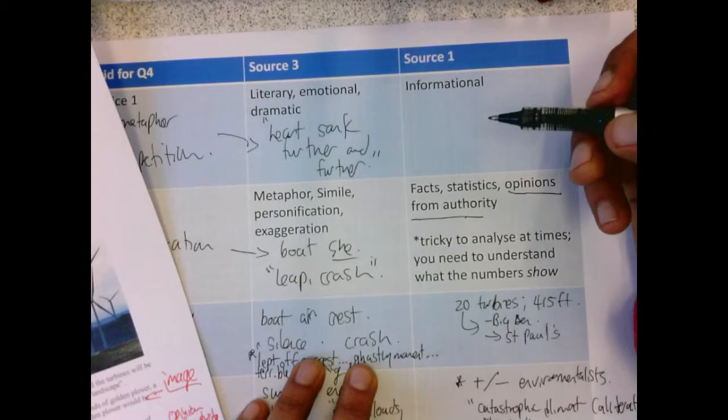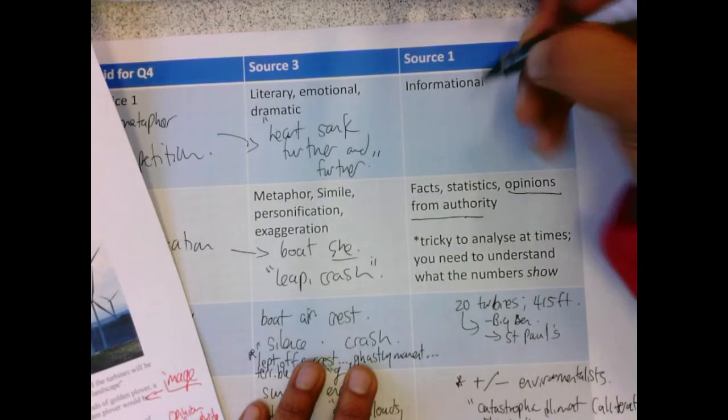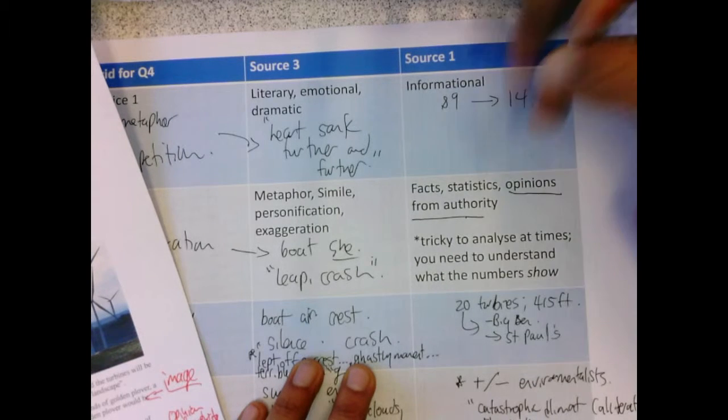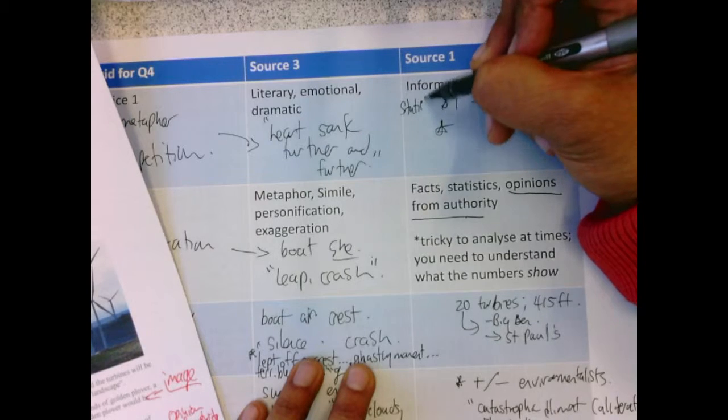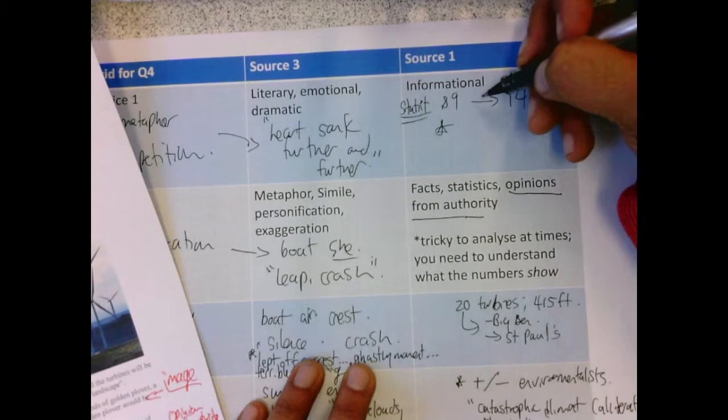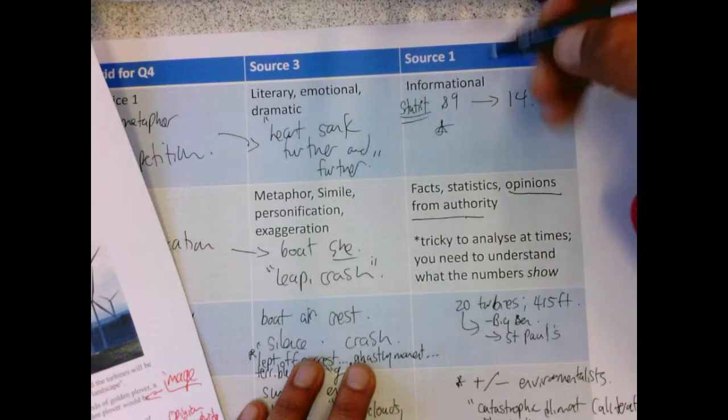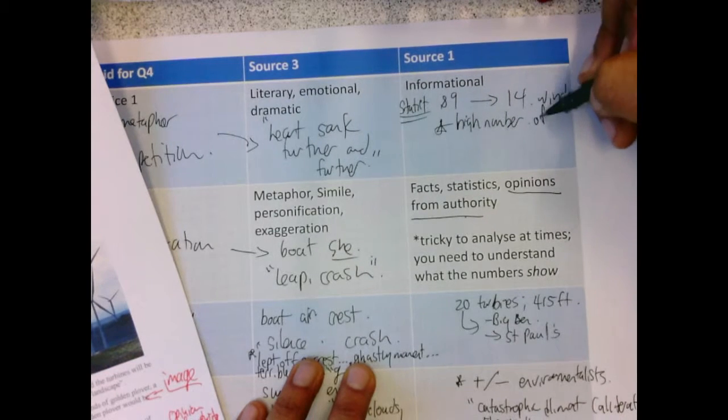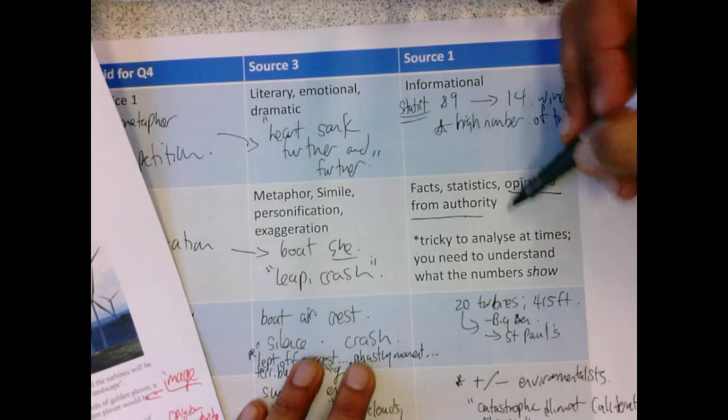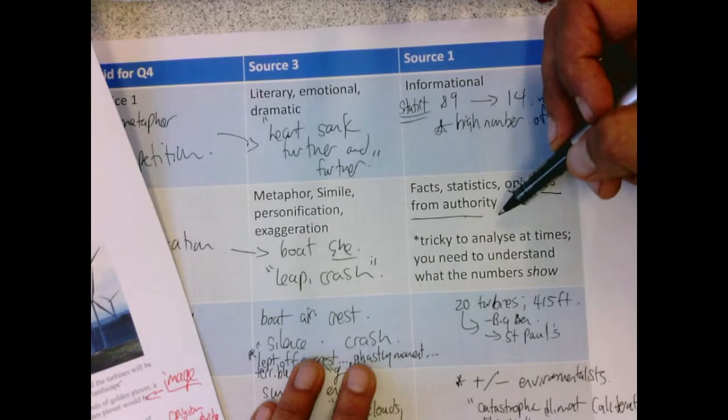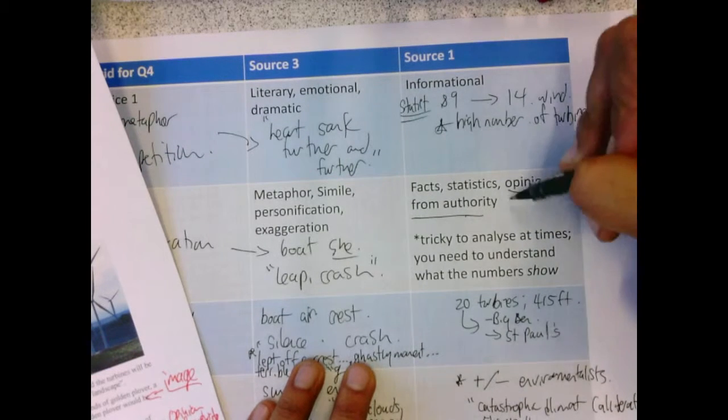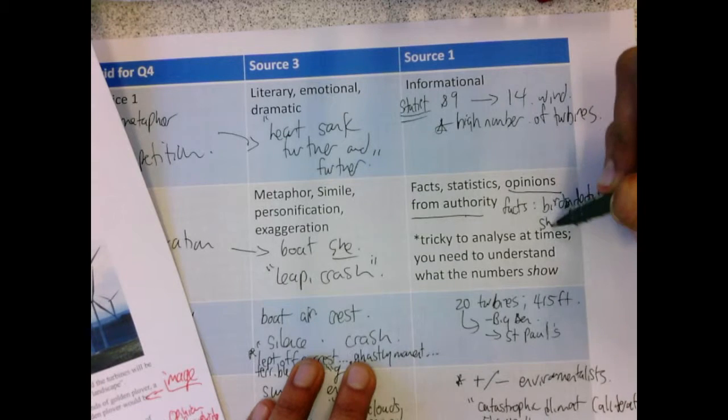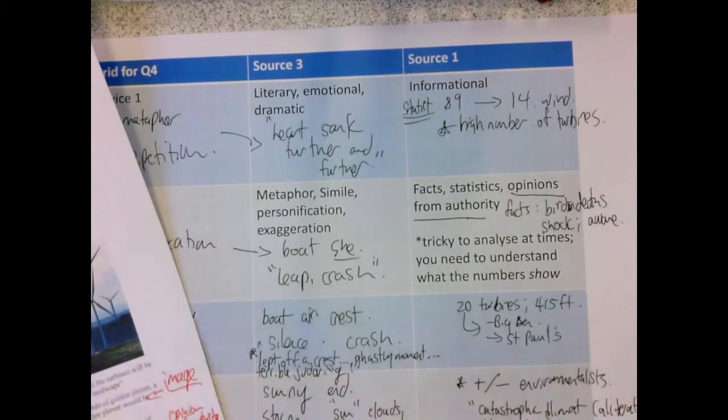Statistics, I can totally do. Of 89 sites, 14 are being used for wind. The key for understanding that is that that is emphasizing the high number of turbines. Another thing they're doing is using facts about birds, bird deaths, to shock you, make you aware of an issue you may not have known about.